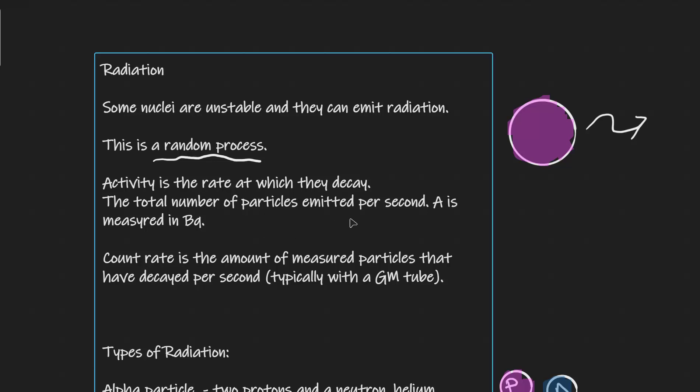This is actually the total number of particles per second and it's measured in this unit which is known as the Becquerel given in BQ. So the activity essentially is the total number of particles emitted per second.